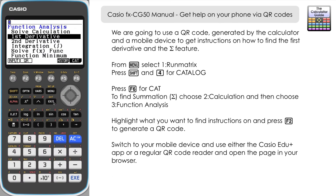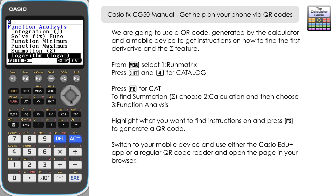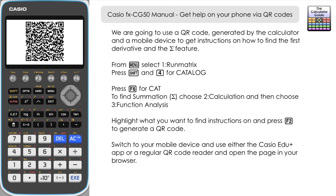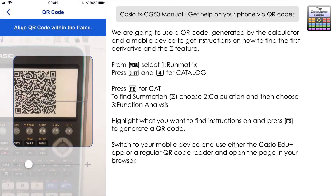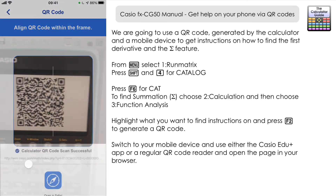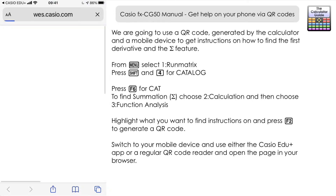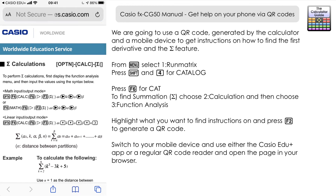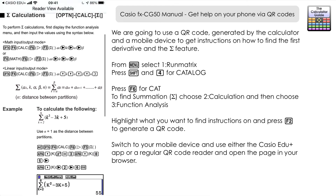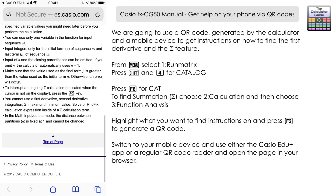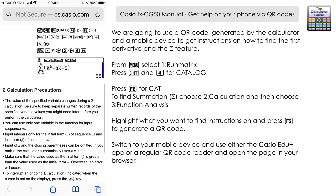Sigma is the sum feature. Go down a little bit further to Summation Sigma and select that one. Press F2 for QR, and once again using the Edu+ app, opening the browser — here we've got instructions on how to use the Sigma feature.